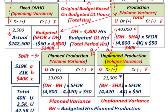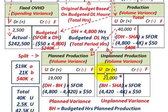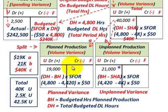For unplanned production, we take budgeted hours of 4,420 and compare to standard hours allowed of 4,000. The difference of 420 hours times the standard fixed overhead rate of $50 gives us $21,000 — again unfavorable — because budgeted hours of 4,420 exceed standard hours allowed of 4,000.